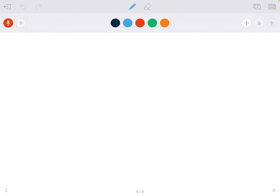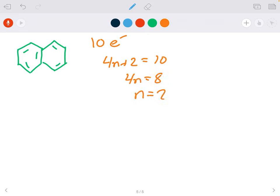Last example here is naphthalene. We have 10 aromatic electrons, five lone pairs, so it seems like it's going to be aromatic here. But let's check. So 4n plus 2 equals 10, 4n equals 8, and n is equal to 2. So this would be an aromatic compound.